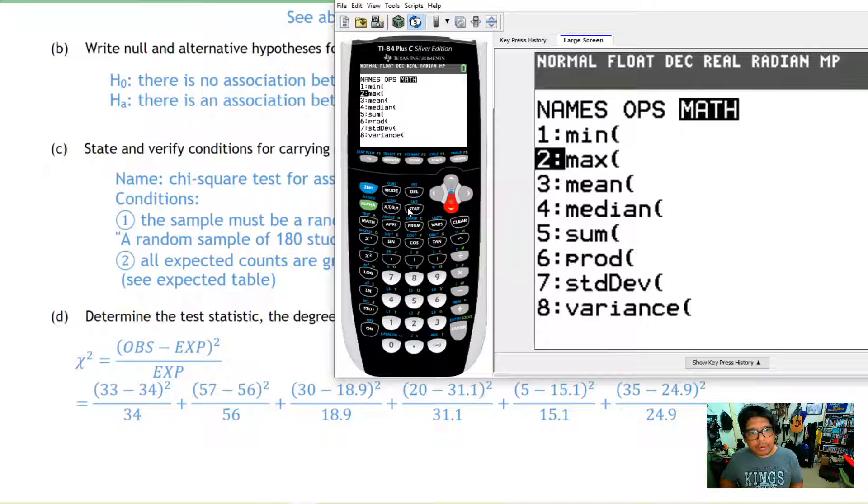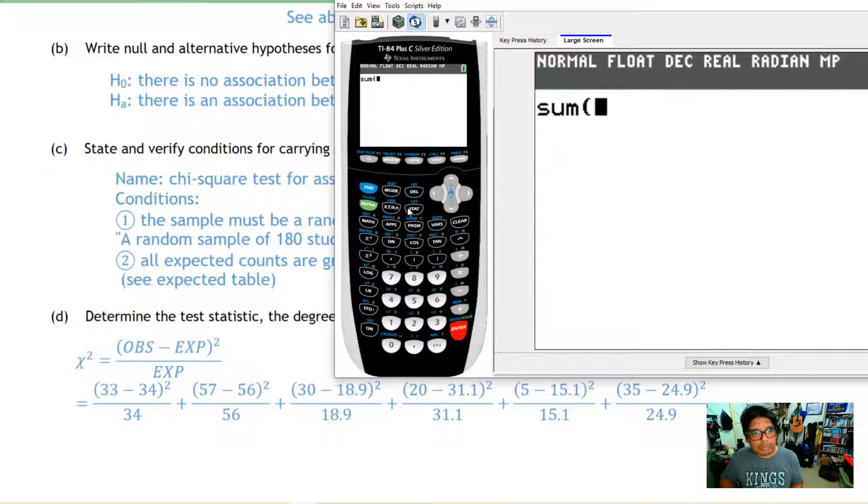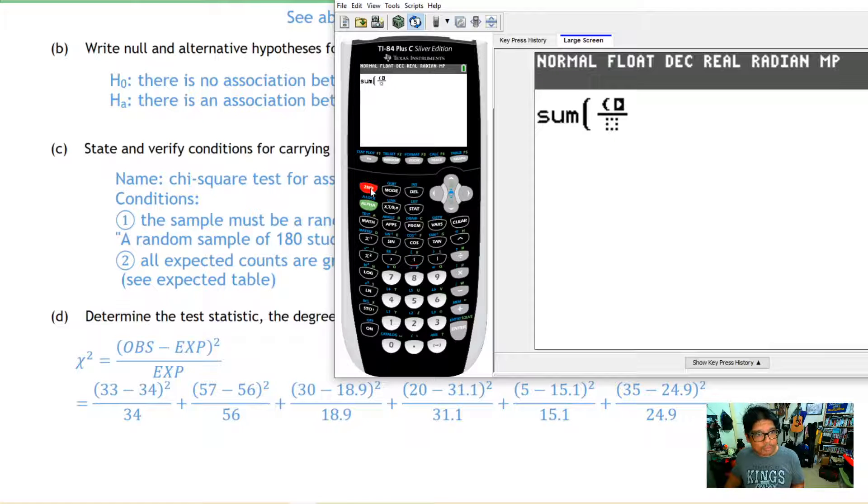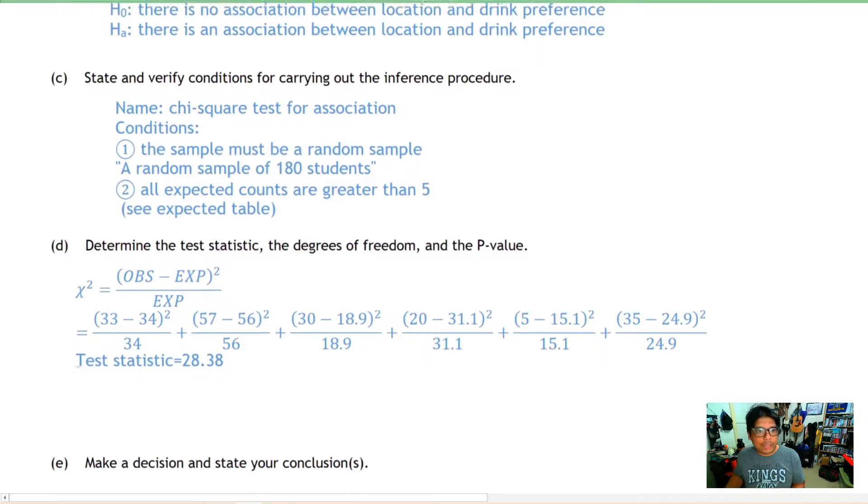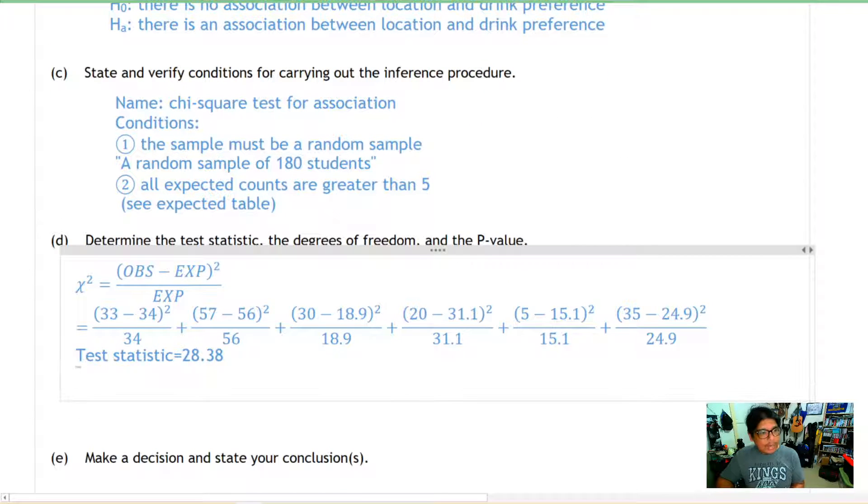Once you have the observed and expected in list one and list two, you're going to do the exact same calculator routine we did before. You're going to go to list math and do sum. You're going to add together the observed, which was in list one, minus the expected, which was in list two, squared over expected. There's our chi-square test statistic: 28.38.